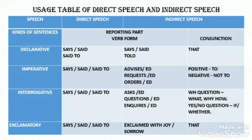For an exclamatory sentence, the reporting part verb forms are 'says,' 'said,' 'said to.' In indirect speech, the reporting part uses 'exclaimed with joy or sorrow.' The conjunction for the exclamatory sentence in indirect speech is 'that.'